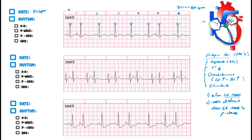Next, we determine rhythm by looking at the R-to-R intervals. The spacing is inconsistent — it goes about two and a half, then one, two, three, four, then shorter again. This is definitely irregular because the R-to-R intervals are not consistent.